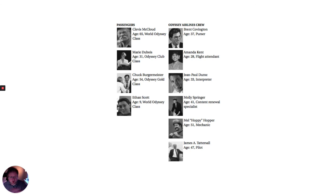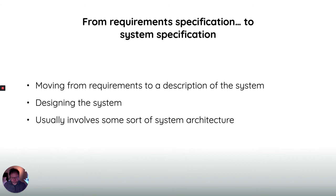Here's an example from a flight entertainment system that played movies on planes. It lists the different people who might use the system, describing a little about each so you can build scenarios for those different personas about how they might actually use the system. Once you have a requirements specification, you often then have a system specification involving designing the system — usually some overview of the architecture — moving from broad requirements to more specific system descriptions, including data structures and how the system will actually work.